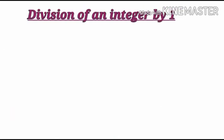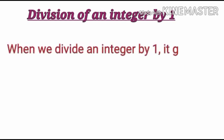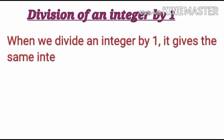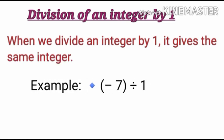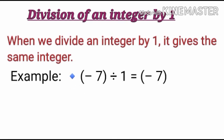Next property is division of an integer by 1. When we divide an integer by 1, it gives the same integer. For example, -7 divided by 1 is equal to -7, that is the same integer.